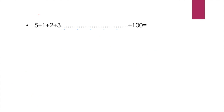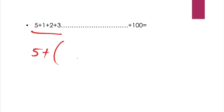I need this: 5 plus 1 plus 2 plus 3 plus ... 100. This is what we have done. If we have 5 in the first time, we will have 5 to x. If we have 5 to x, we will have 100. So, n into n plus 1.